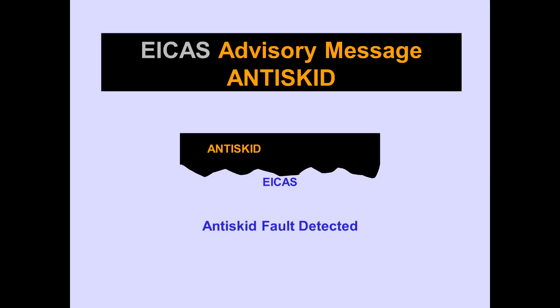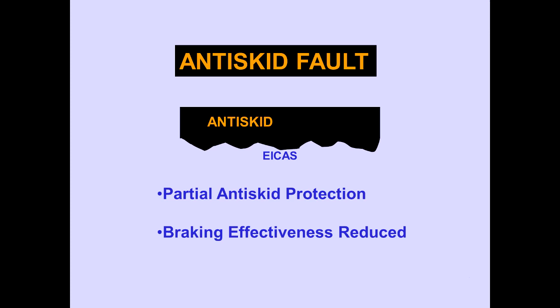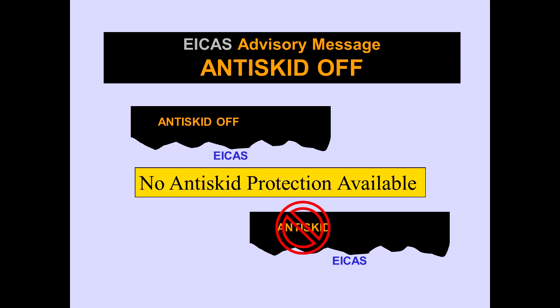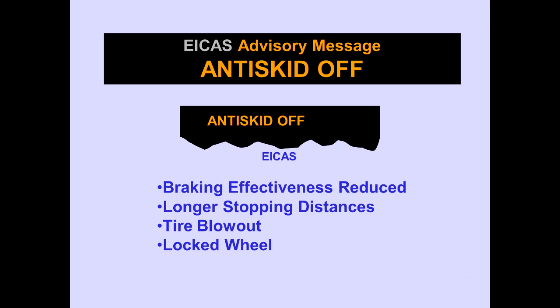The ICAS advisory message, anti-skid, is displayed when a fault is detected in the active anti-skid system. With an anti-skid fault, only partial anti-skid protection may be available and braking effectiveness may be reduced. The ICAS advisory message, anti-skid off, is displayed when there is no anti-skid protection available. With no anti-skid protection, braking effectiveness is reduced and may cause longer stopping distances, possible tire blowouts, or locked wheel conditions.